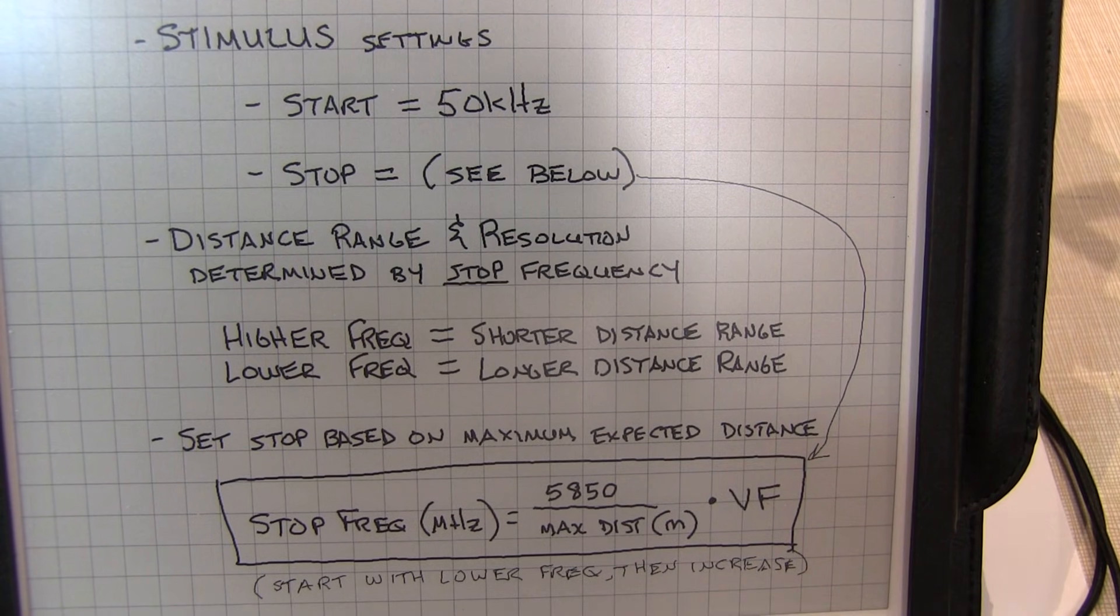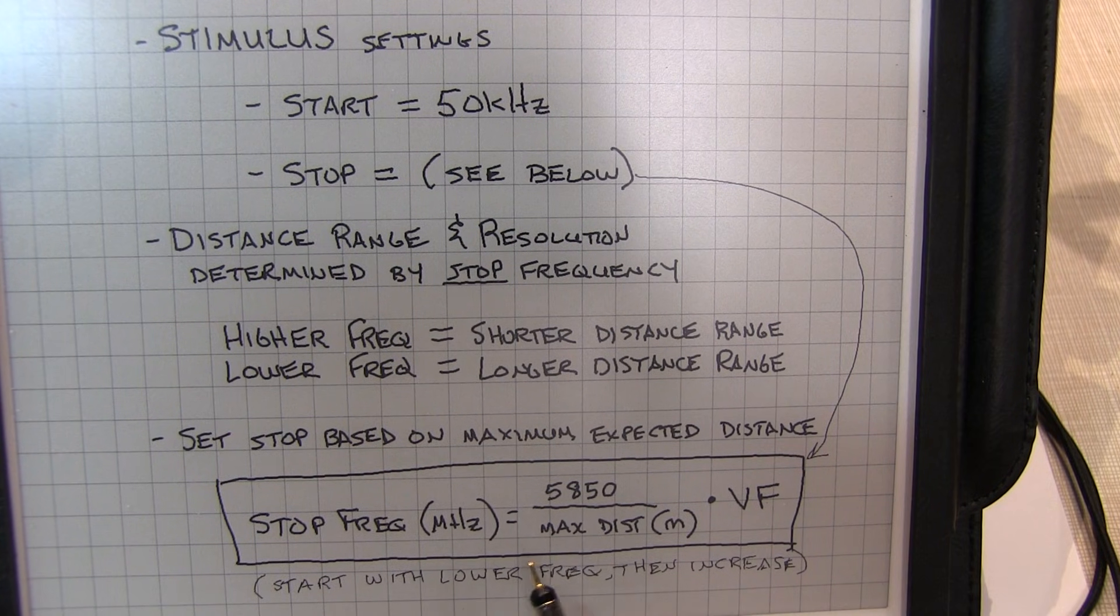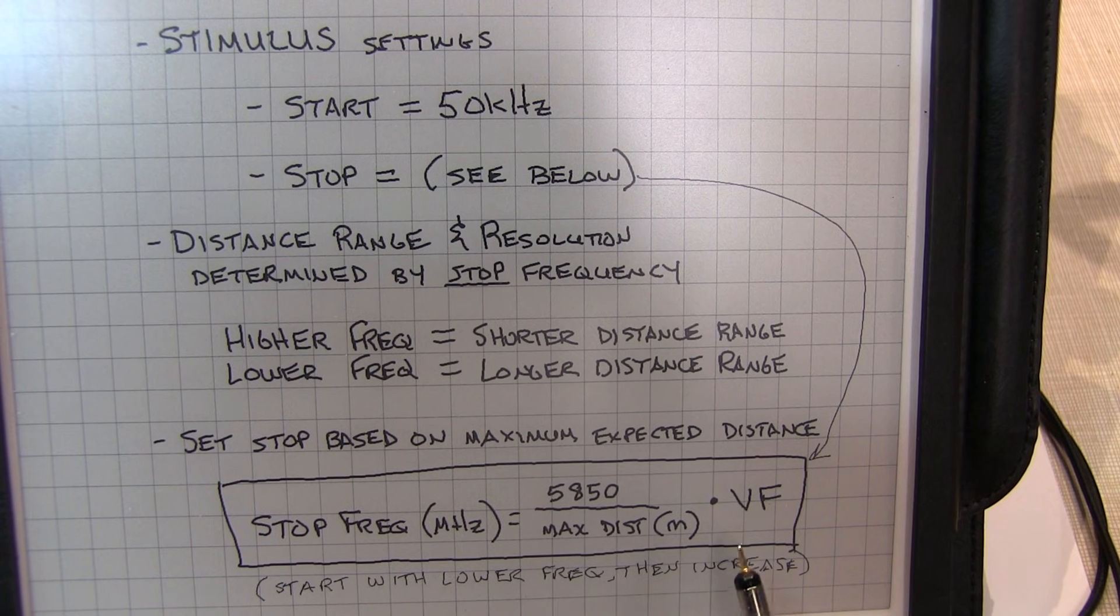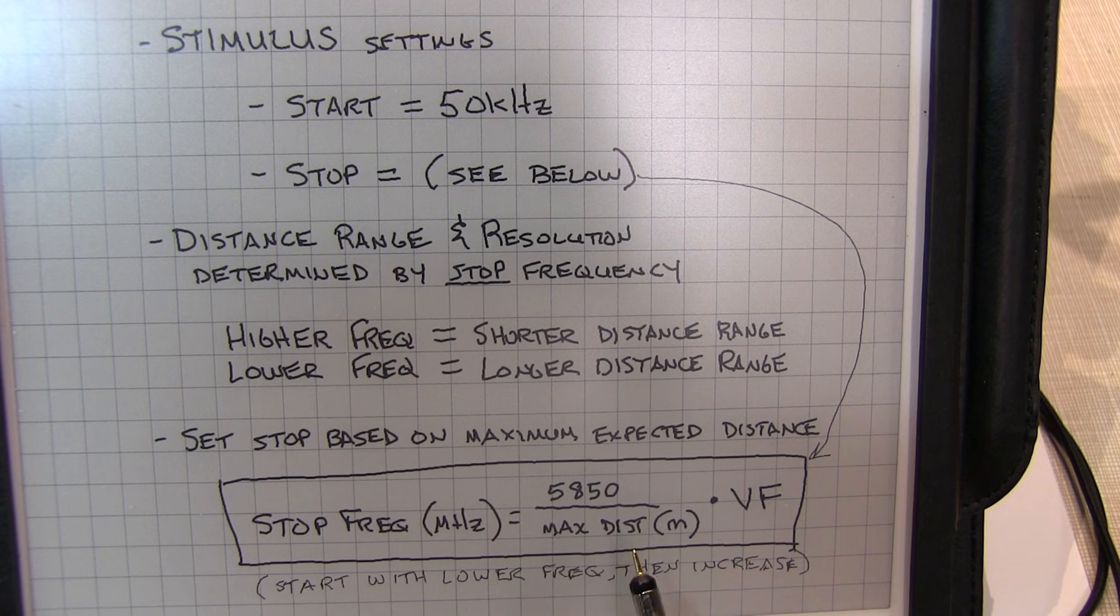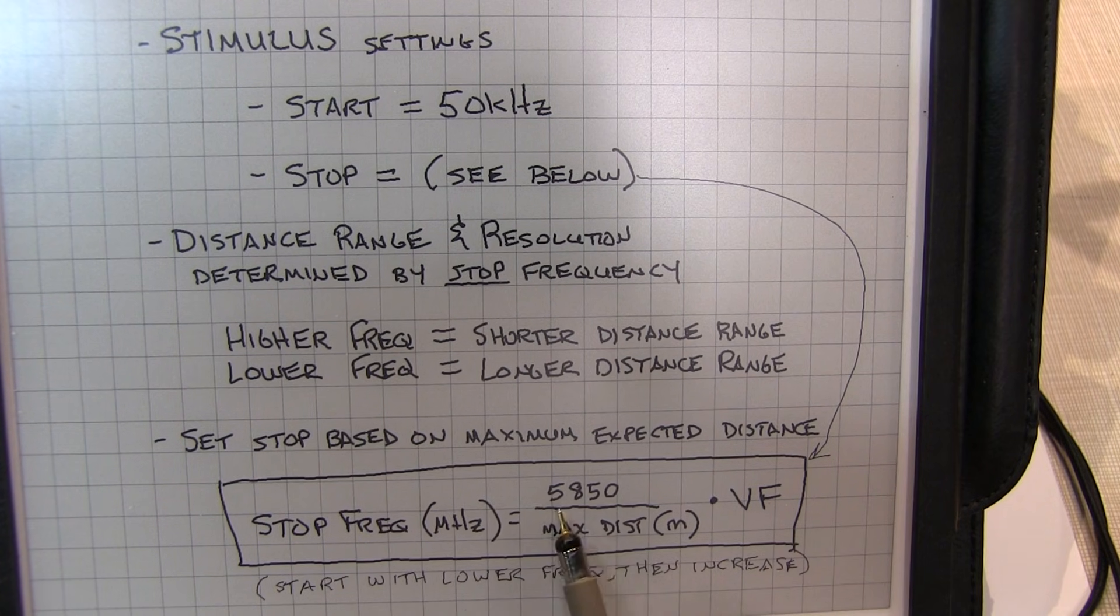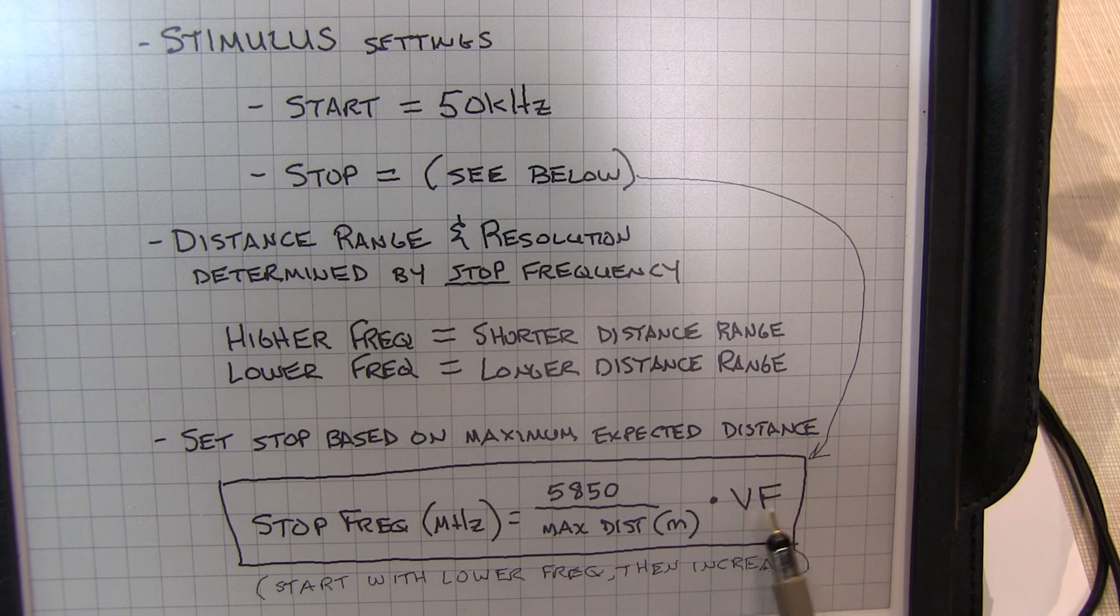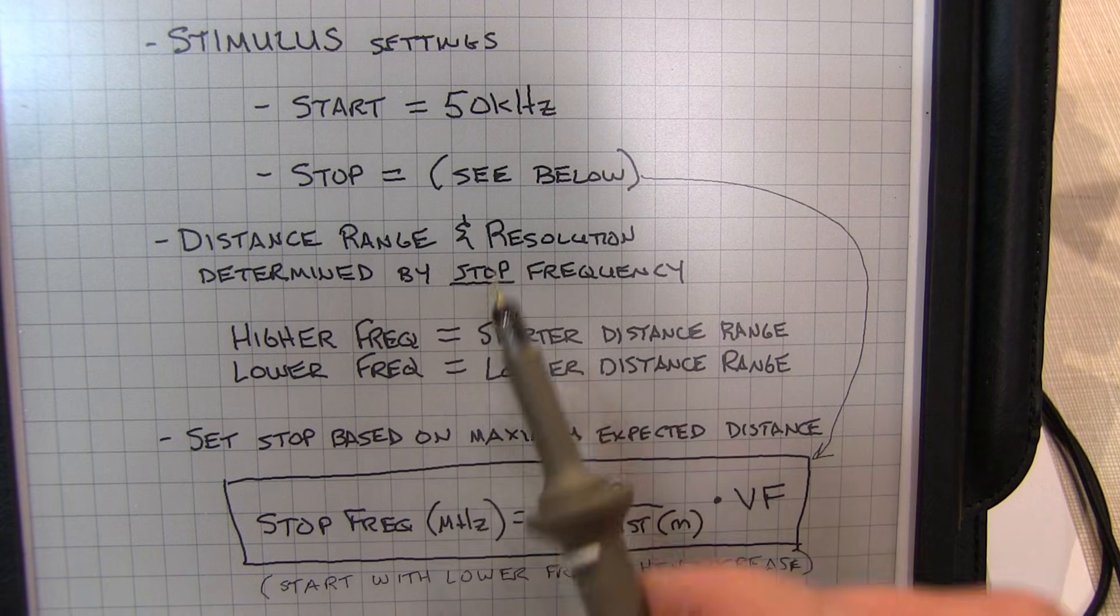Remember, we only have 101 points that we're dealing with. After playing around with the instrument, I determined empirically the relationship between the maximum distance you can measure and the stop frequency, and it comes down to this formula. If you figure your coax is no more than 20 meters or 25 meters long, you put that distance in meters here. You take 5850 divided by that maximum distance multiplied by the velocity factor.